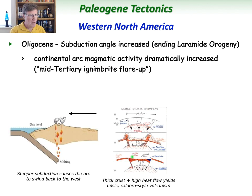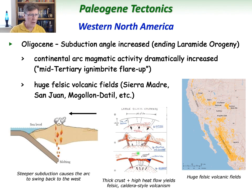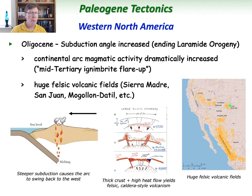Thick crust and high heat flow from the arc passing through that crust gives continental caldera-style volcanism. Lots of major felsic volcanic fields across the Rocky Mountain area: the Sierra Madre in Mexico is a thick sequence of these felsic volcanic units, extending northward into the U.S. — the Mogollon-Datil field in eastern Arizona and western New Mexico. Moving into the Four Corners region in Colorado, we have the San Juan Mountains with major-league caldera eruptions by volume, and then the Marysvale area in Utah and the Great Basin of Nevada.